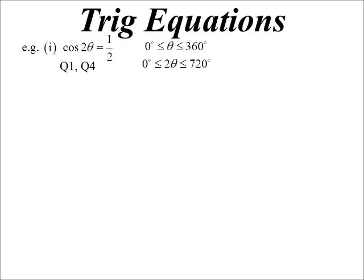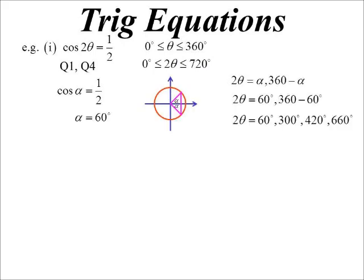I'd just identify my quadrants, I'd find the acute angle, which is 60, but they of course would be answers for 2 theta, which means I need to go around the circle again, and I get 4 possible answers, divided by 2. Okay, so we've seen ones like that.